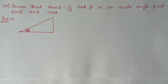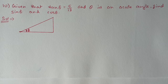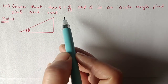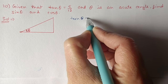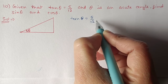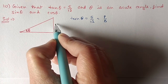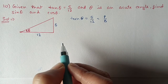Next, Question 10: given that tan θ equals 5 by 12 and θ is an acute angle. tan θ is given as 5 by 12. Since tan θ is perpendicular by base, it means perpendicular is 5 and base is 12. Now with the help of Pythagoras theorem we will find out the hypotenuse.